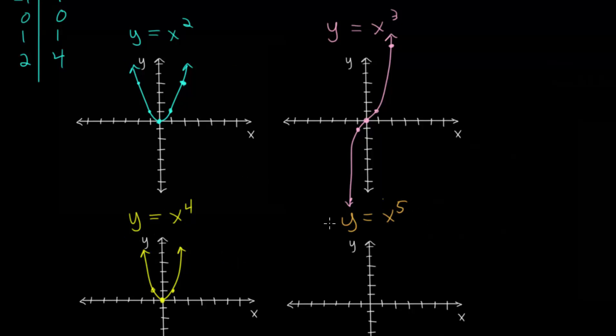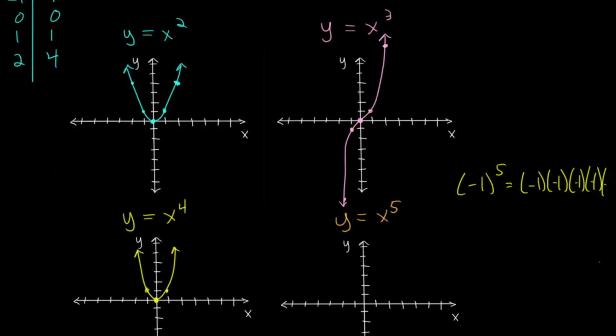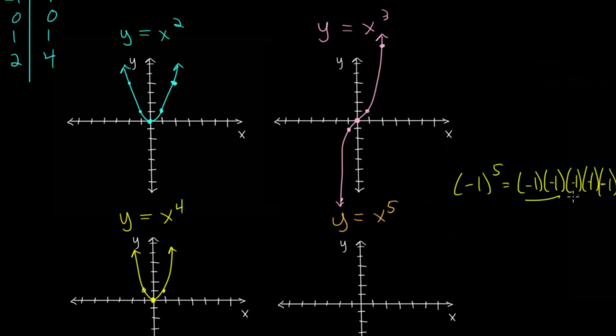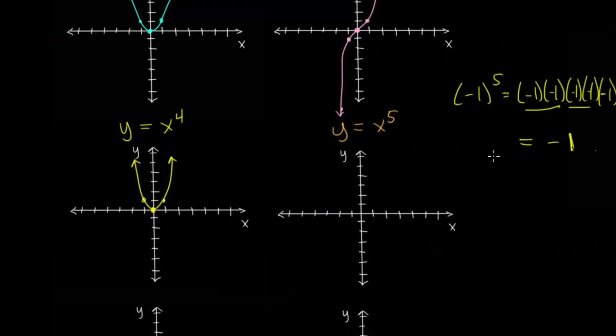And we can now look at this 5th degree parent function for a polynomial. And what we'll see is it's going to look just like the cubic, because when we plug in negative numbers, raising them to the 5th power, like let's say negative 1 to the 5th power, you're going to have 5 of them multiplied together. And there's always going to be 1 left over. So we're able to pair up 2 there, 2 there, and so these will become positive, but then we're going to take a positive number and multiply it by a negative number, and so the end result is negative 1. So every negative number we put in here will have a negative value.